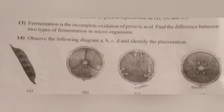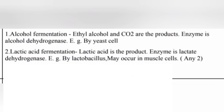Question 13. Fermentation is an incomplete oxidation of pyruvic acid. Find the difference between two types of fermentation in microorganisms. Answer: 1. Alcohol fermentation — ethyl alcohol and carbon dioxide are the products; enzyme is alcohol dehydrogenase; example: yeast cells. 2. Lactic acid fermentation — lactic acid is the product; enzyme is lactate dehydrogenase; example: Lactobacillus; may also occur in muscle cells.